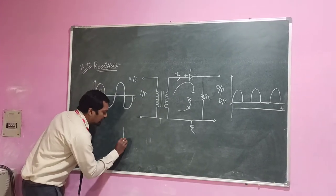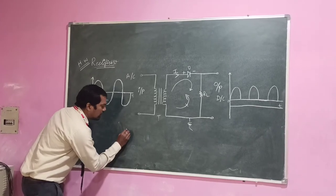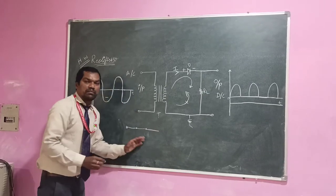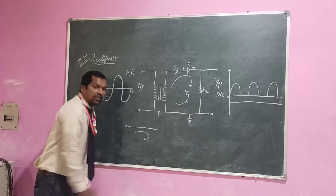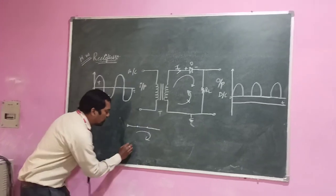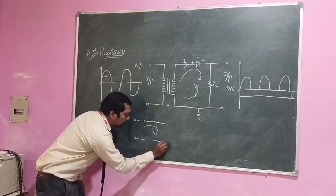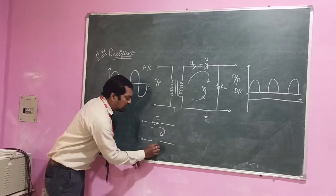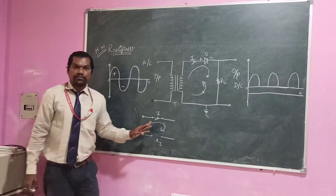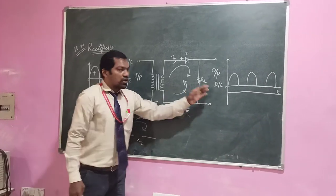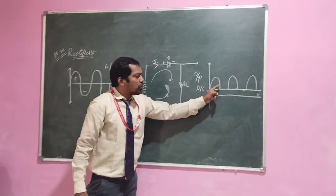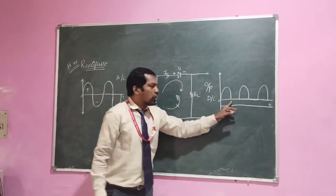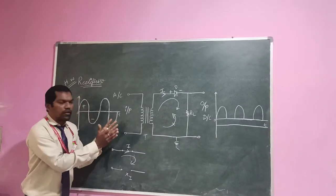For example, here I am taking the input signal. If current passes in the forward direction, we will get the output. Whereas coming to negative cycles, the diode will open up — there is no current. Current will pass only in the forward direction; there is no current in the reverse direction. So, in the output, we are getting signals only in the positive direction. Negative cycles are cut off or blocked by the diode.